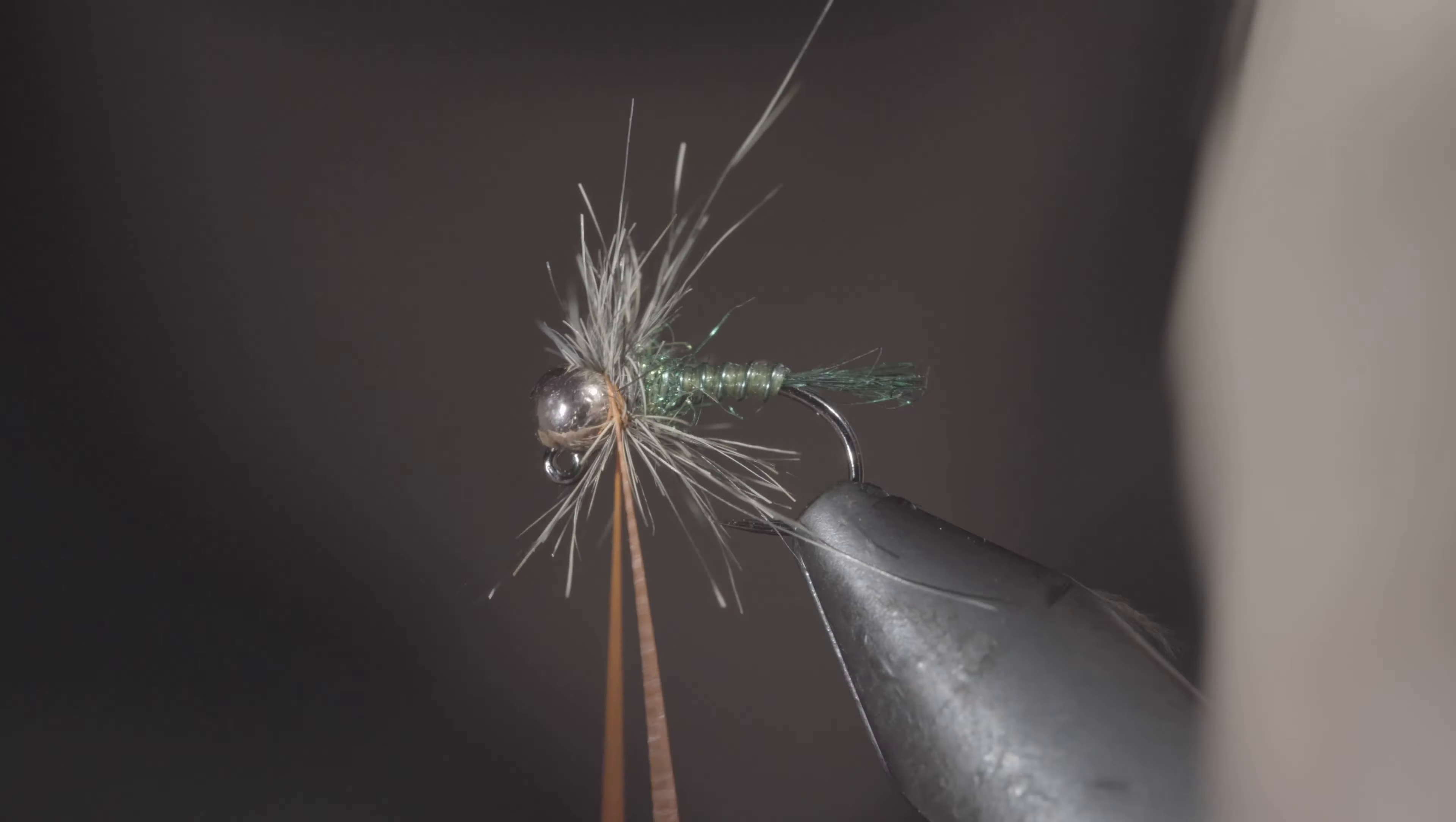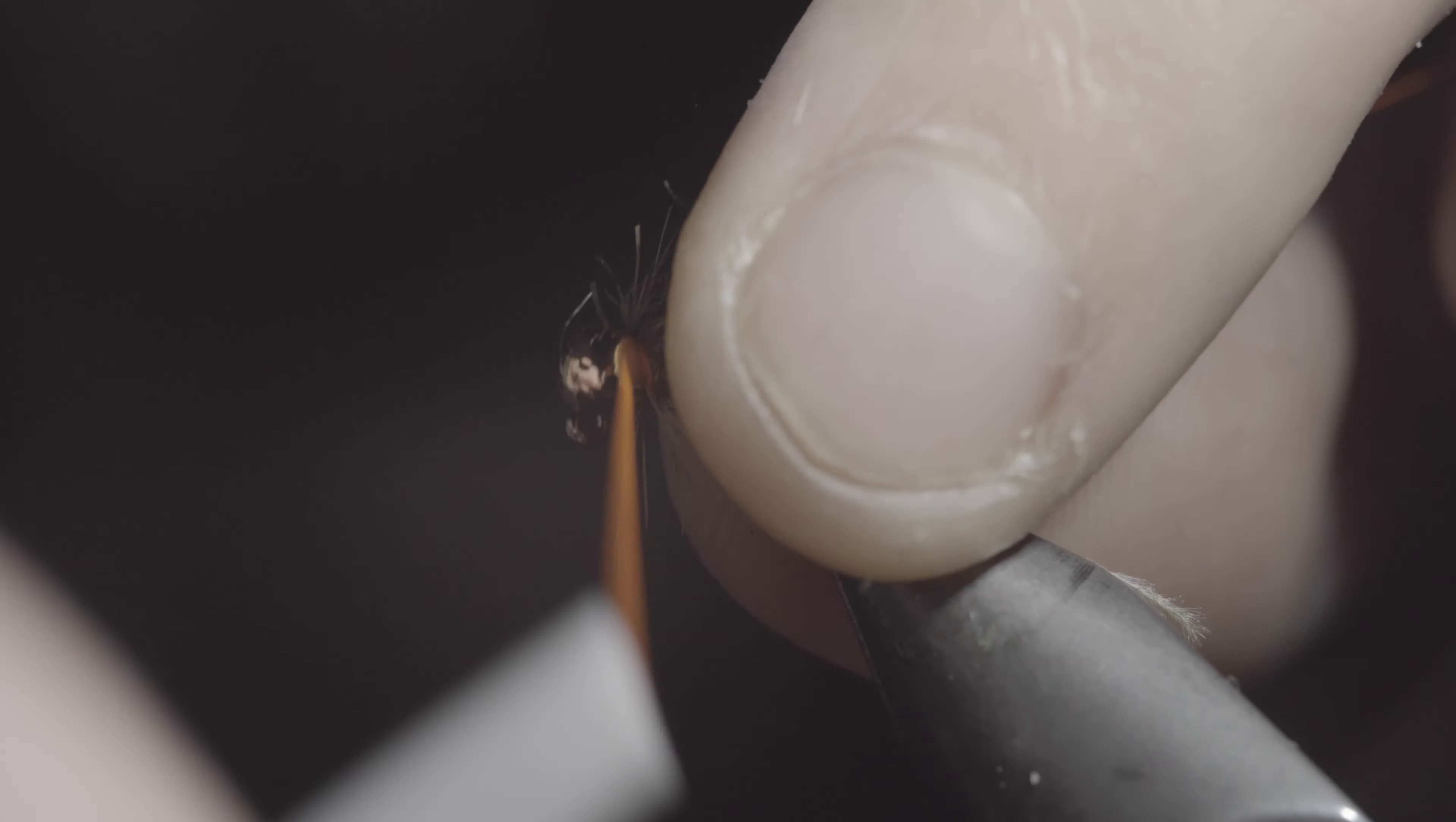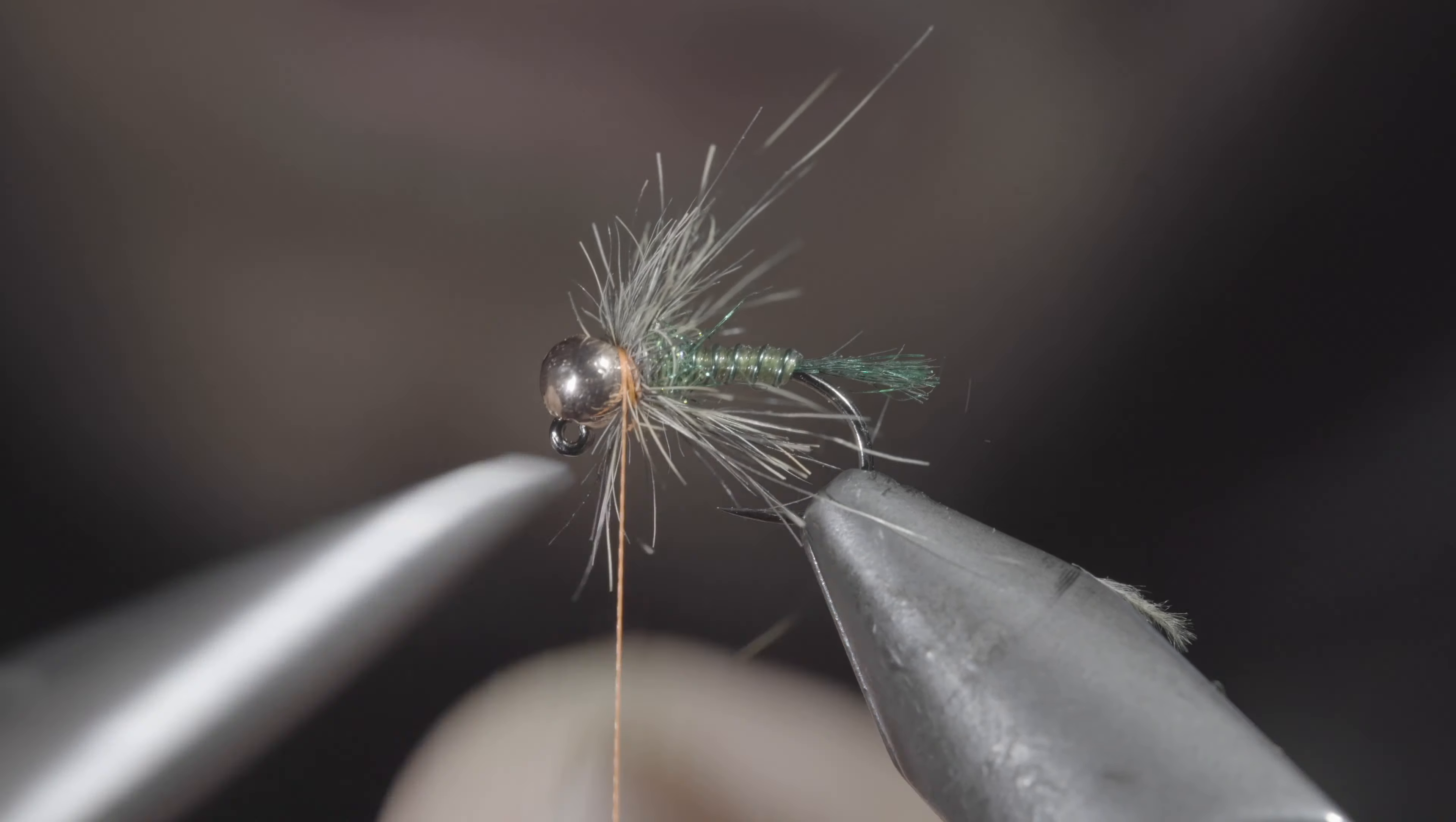Secure with your thread and snip the excess free. Whip finishing to add a hotspot to the head of our fly.